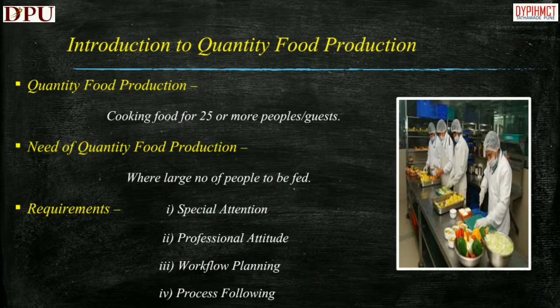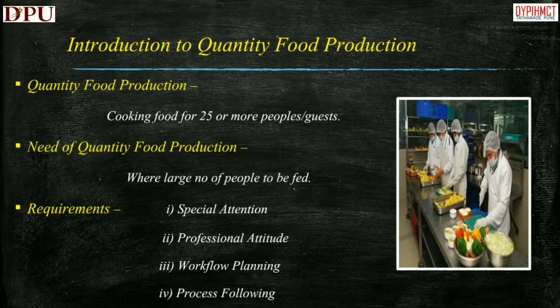Today we are going to learn about the concept of quantity food production. Quantity food production is difficult to define and cannot be restricted to some number. However, it can be defined as cooking food for 25 or more people. The requirement of quantity food production is seen where there are a large number of people to be fed — for example, banquets, industrial canteens, religious places like Langar in Amritsar, and so on.